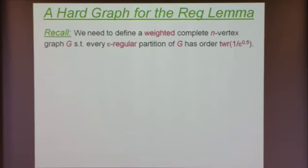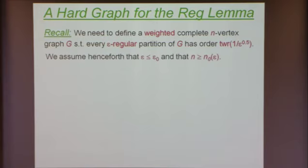Now we are ready to describe the graph that is hard for the regularity lemma — meaning every regular partition of this graph must be very large — and then I will try to finish the proof and show you why this is indeed the case. I will assume throughout that epsilon is smaller than some absolute constant, and that n, the number of vertices, is large as a function of epsilon.